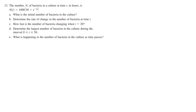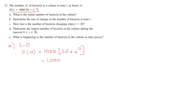A word problem: the number N of bacteria in a culture at time t in hours is represented by a given function. For part a, what is the initial number of bacteria? Setting t equals zero gives N(0) equals 1000 times (30 plus e to the power of zero), which equals 1000 times 31, giving an initial count of 31,000 bacteria.